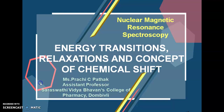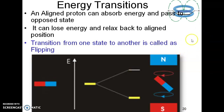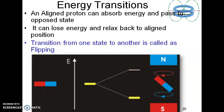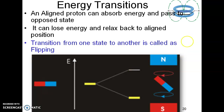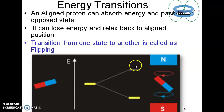A spinning nucleus kept under an external magnetic field has a precessional frequency and it can assume two orientations depending upon the spin quantum number of a particular proton. For a proton, the spin quantum number is half, so 2I+1 becomes 2. A proton can assume either an aligned orientation or an opposed orientation with respect to the external magnetic field. The aligned proton is always at a lower energy state and the opposed proton is always at a higher energy state.